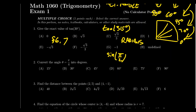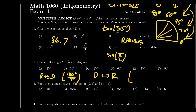Question number two is about angle conversion. Can you convert an angle measurement from radians to degrees, or from degrees to radians? To convert from radians to degrees, multiply the given angle by 180 degrees over pi. To convert from degrees to radians, multiply the angle by pi over 180 degrees. Angle conversion was covered in lecture 7 when we introduced radian measure.